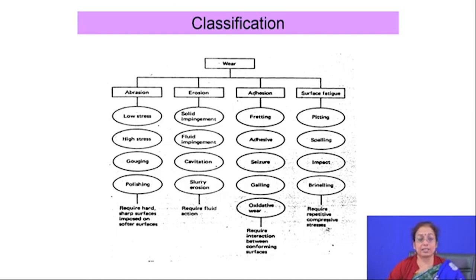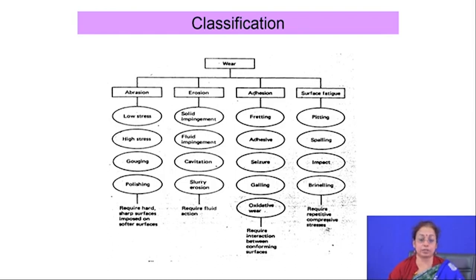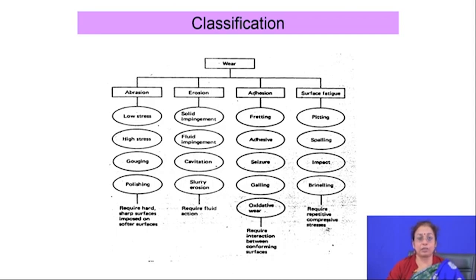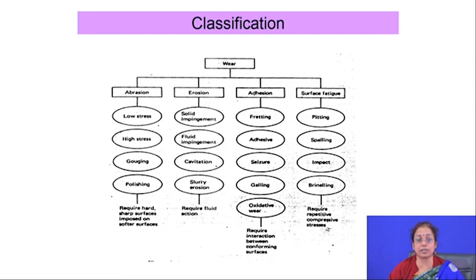Wear is a very interesting phenomenon — it is progressive in nature. For wear to occur there has to be relative motion between two surfaces, and wear is actually measured in terms of the loss of materials. There are different ways by which wear occurs, depending on the kind of mating surface, hardness differences between surfaces, and the environment.